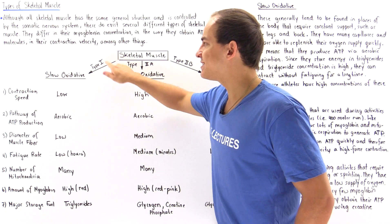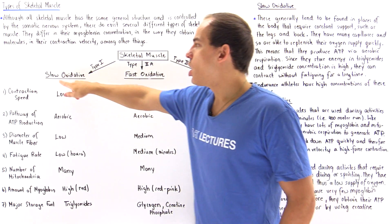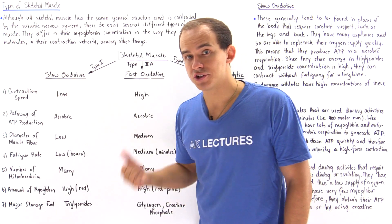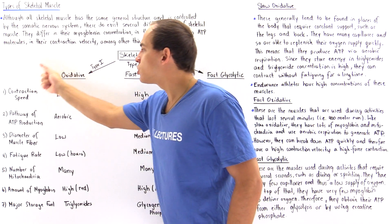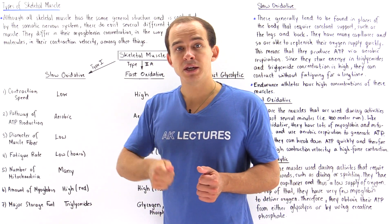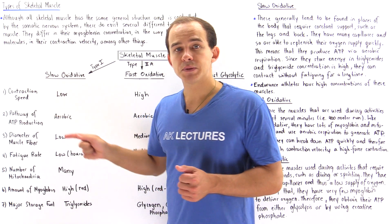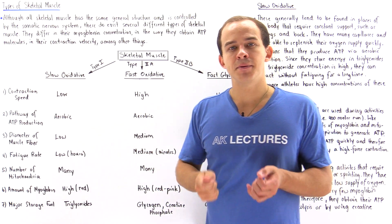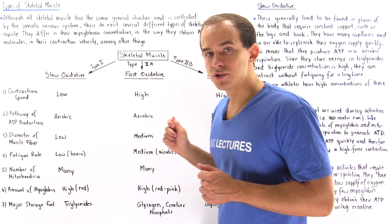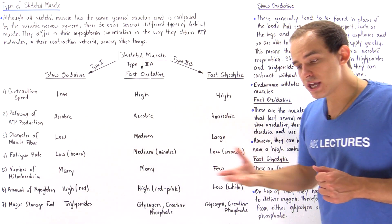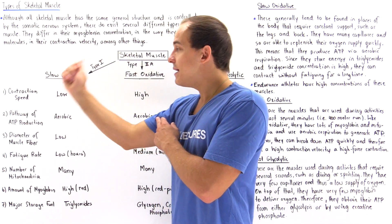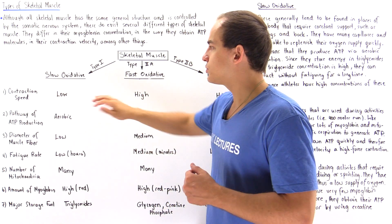Let's begin with Type 1 skeletal muscle, also known as slow oxidative or slow twitch muscle. Slow simply means the breakdown rate of ATP is slow. So these types of muscles break down ATP very slowly, and that means the contraction speed — the velocity at which these muscles contract — is low. These muscles basically contract relatively slowly.